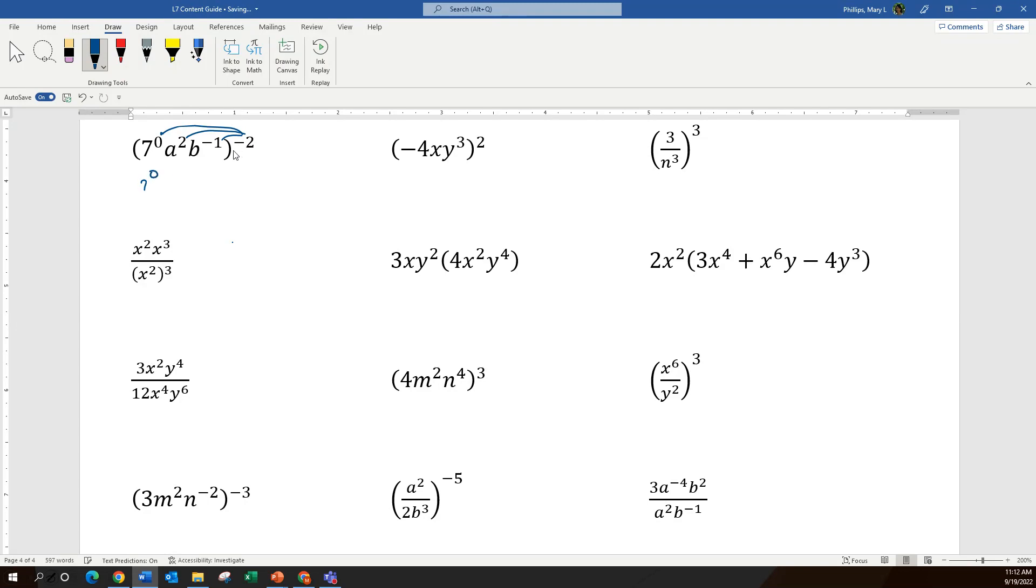The first one I will have 7 and then 0 times negative 2 is still 0. Next I have a and that would be to the negative 4th power. Then I have b and so two negatives make a positive 2. Anything to the 0 power is 1, so 7 to the 0 power is 1. Simplifying I have a to the negative 4th and b squared.